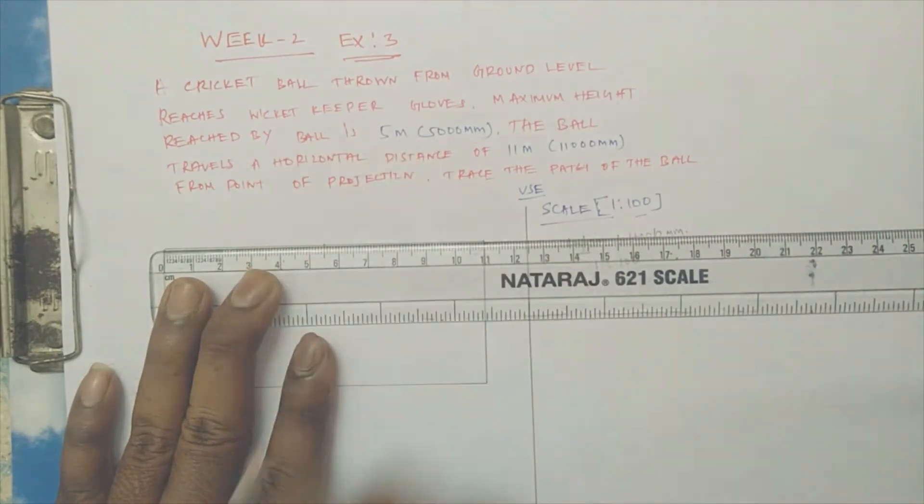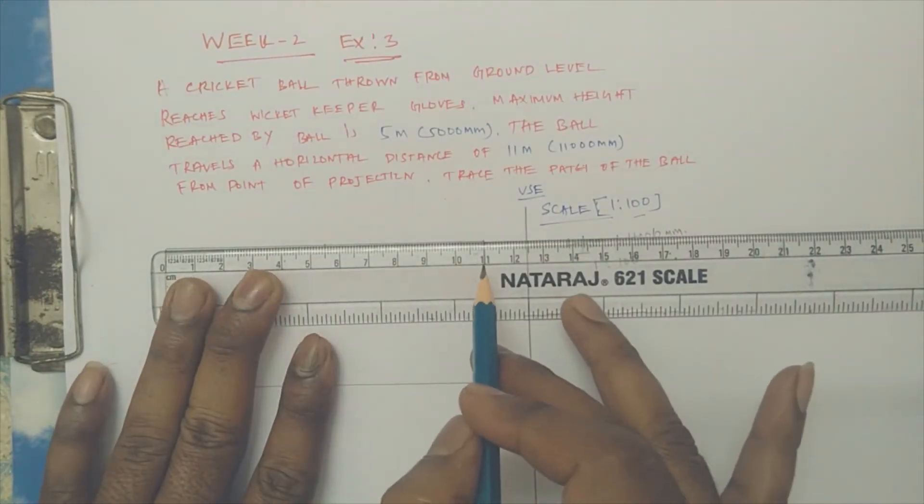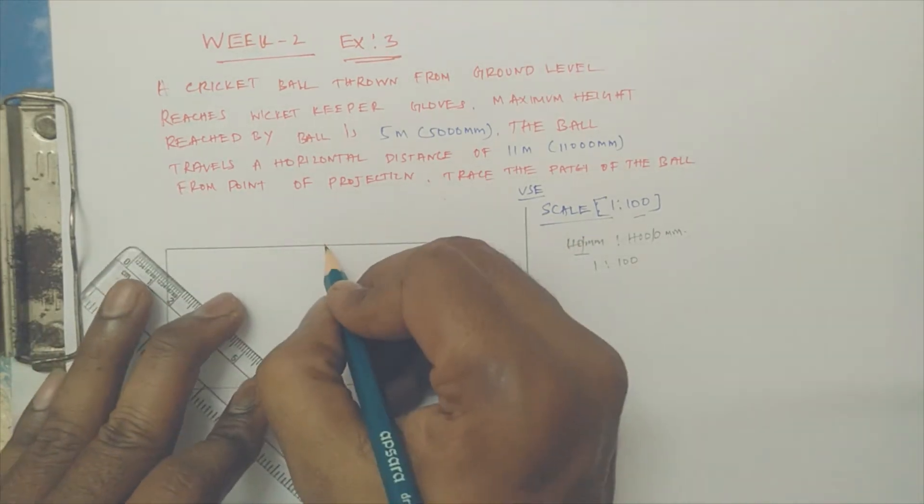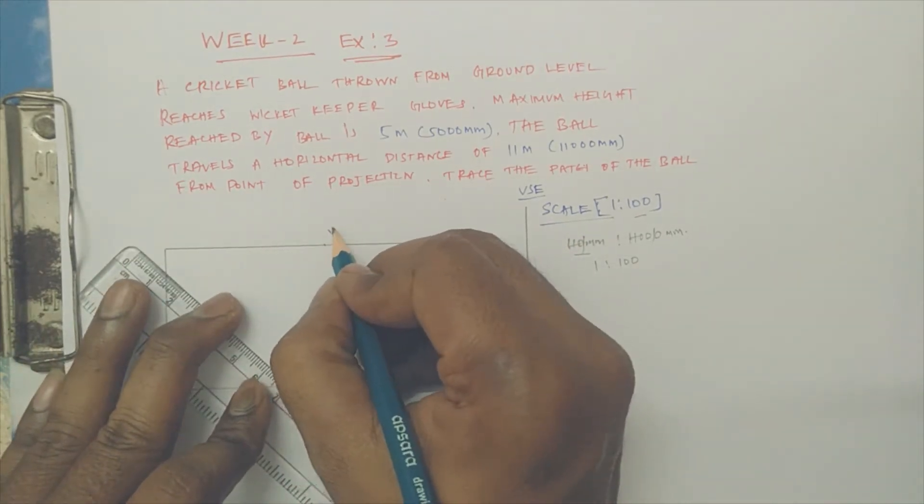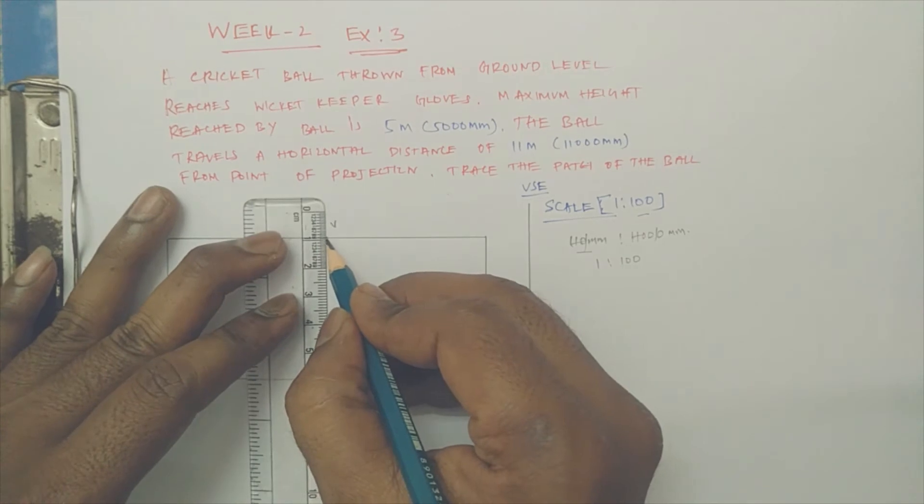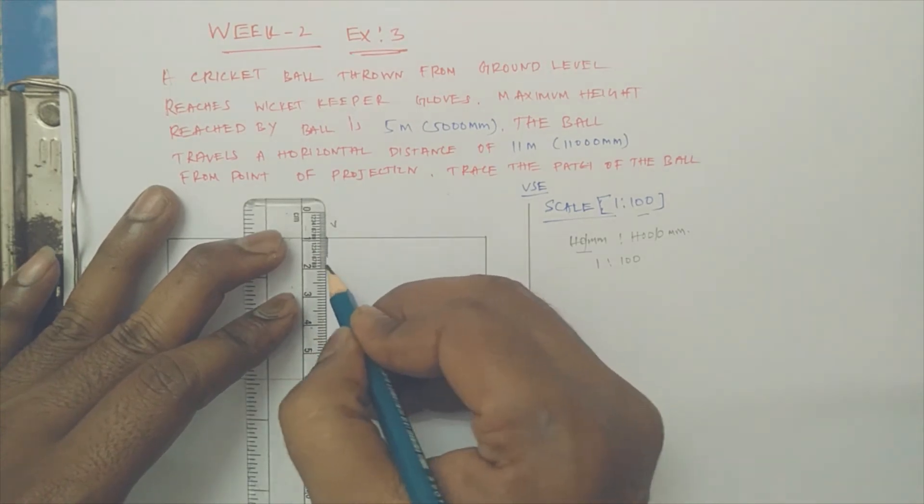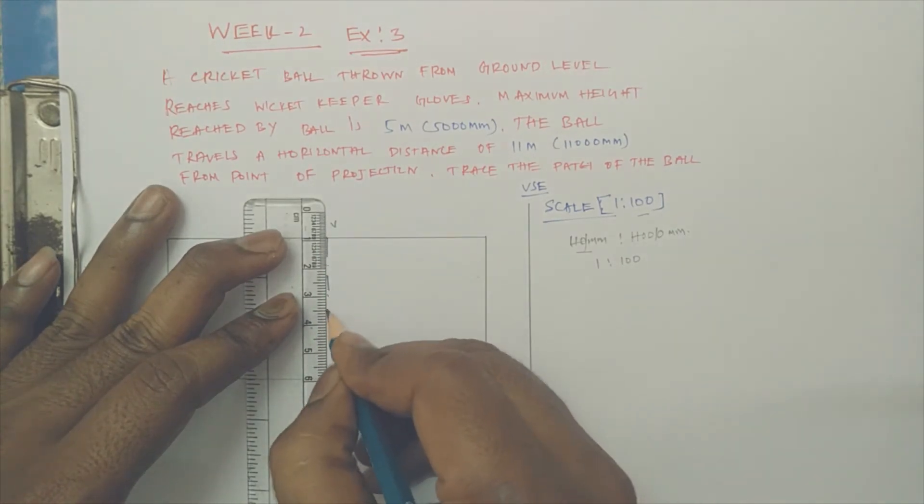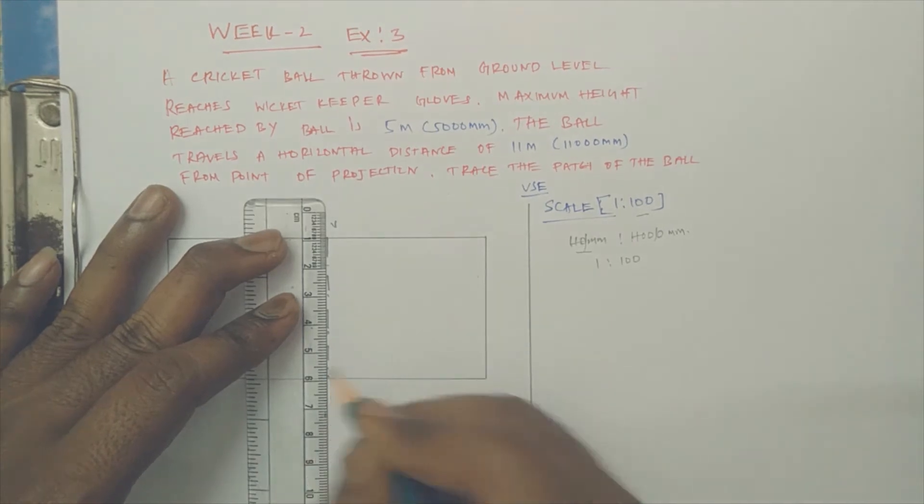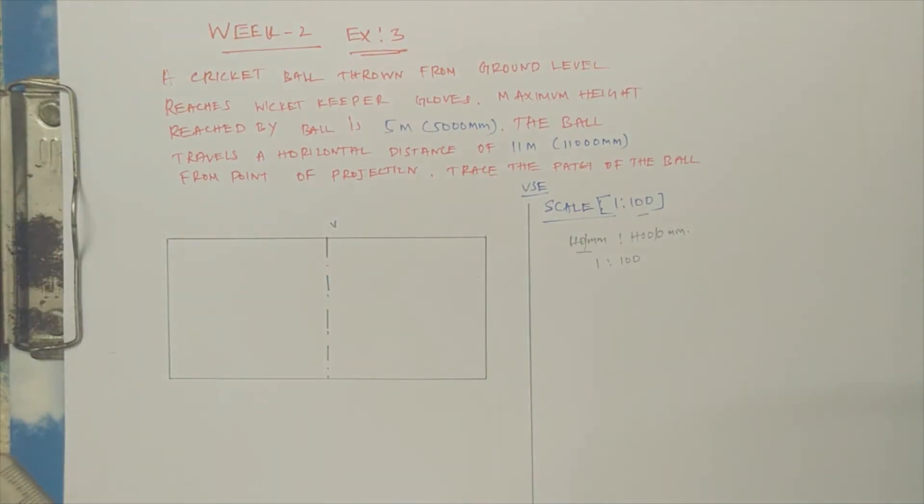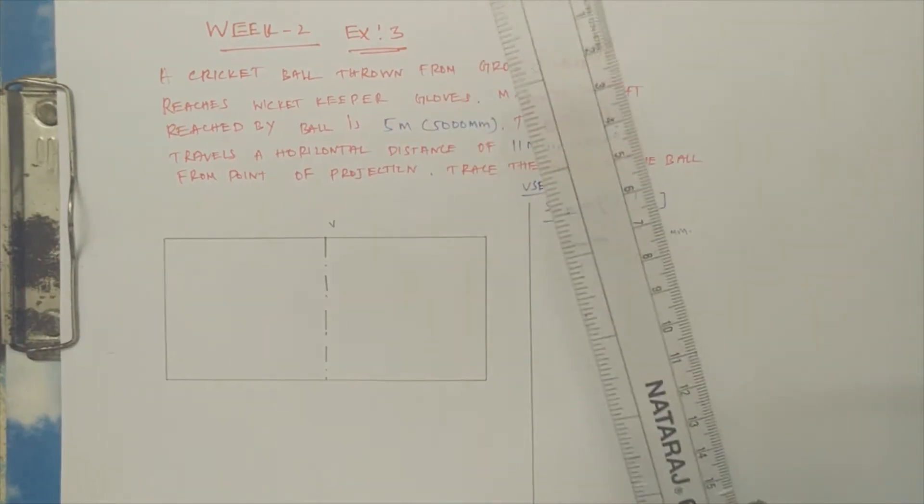Let us fix the vertex point, which is the topmost point for a parabola. It's totally 11 centimeters, so 5.5 I am considering as the vertex for the parabola. I am dividing the axis line for our convenience using a long dashed dot line.